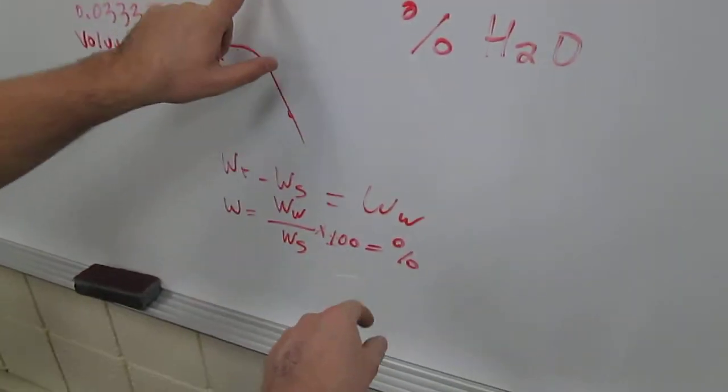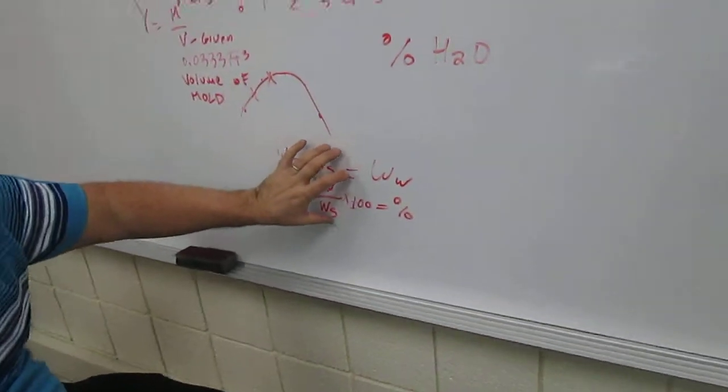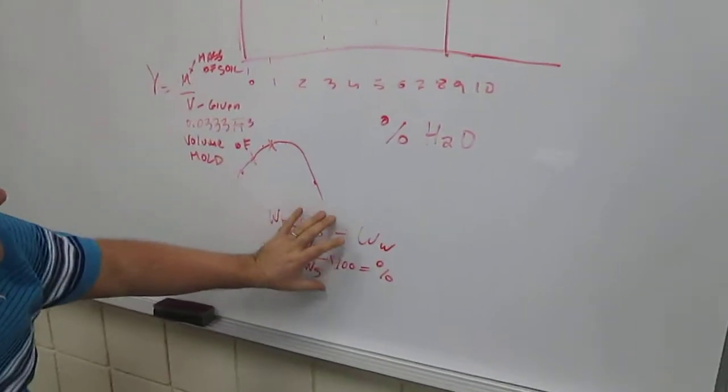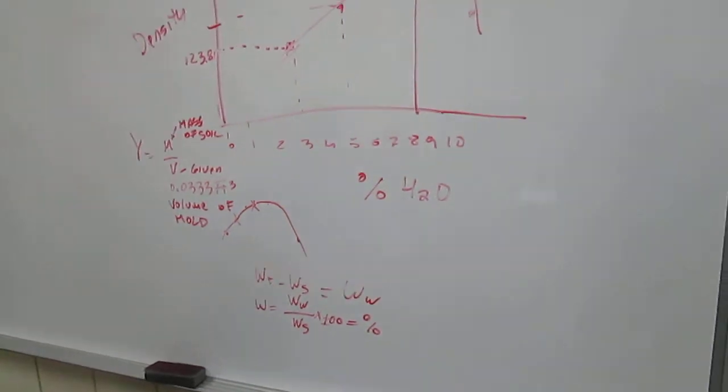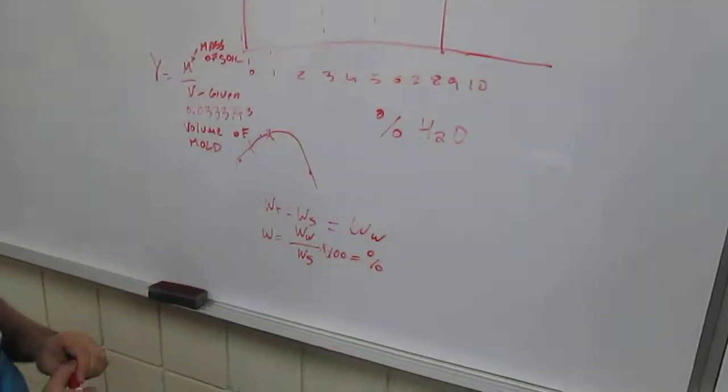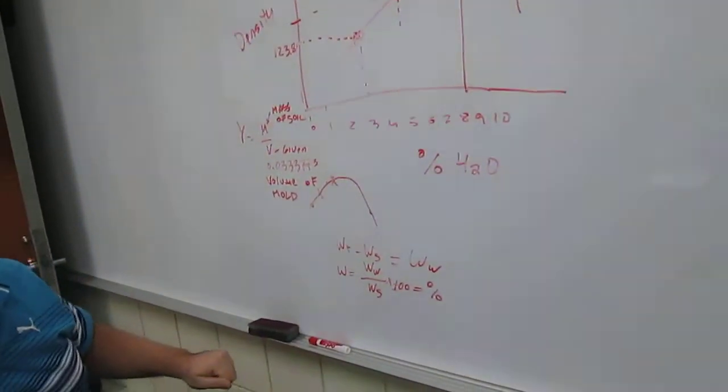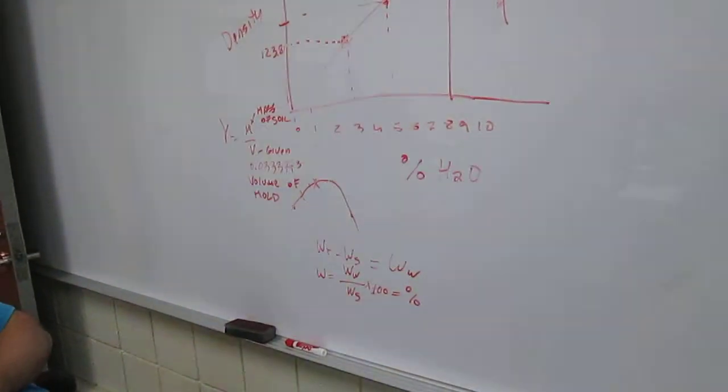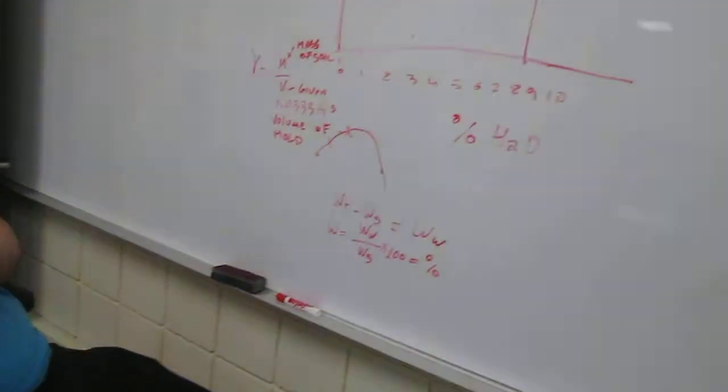No, this goes on the bottom, this is the top. This is the y-axis, this is the x-axis. I got you. This marker does not write properly. Does that make sense? Yep, okay good.